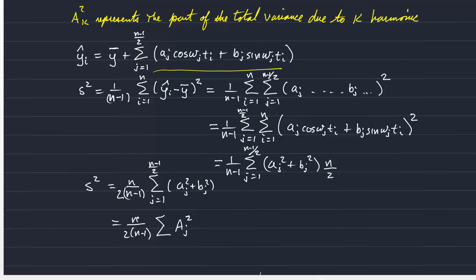So you can see that the total variance is a sum of variances of each of the harmonics that we're considering.